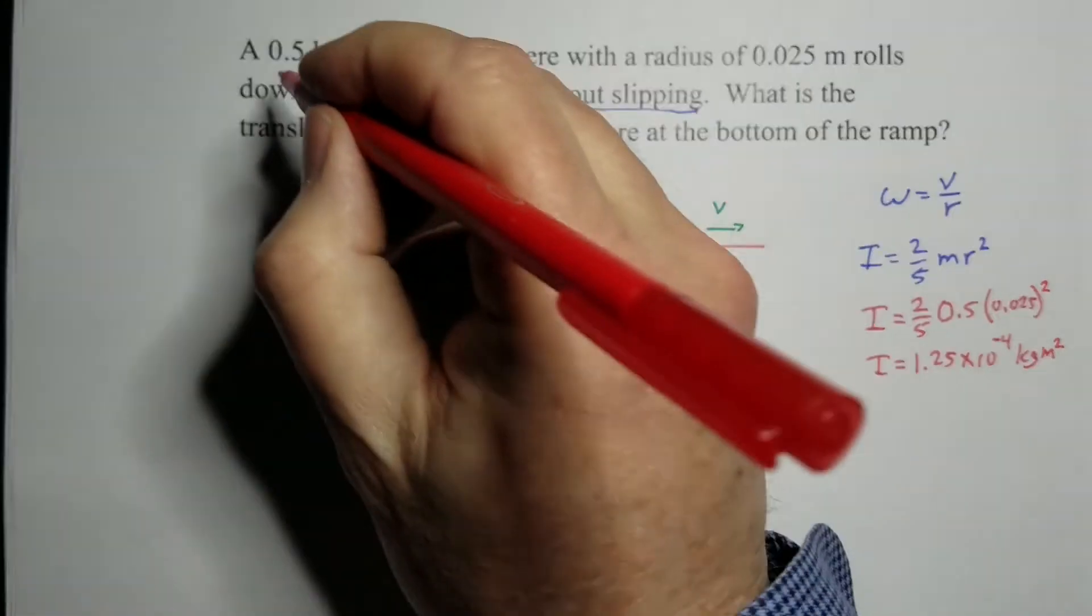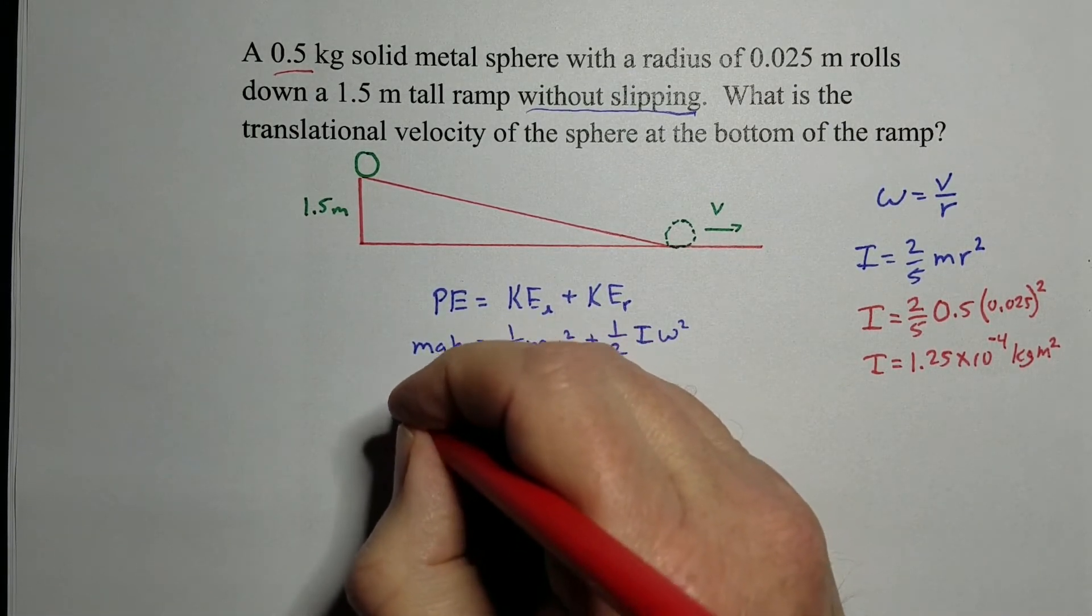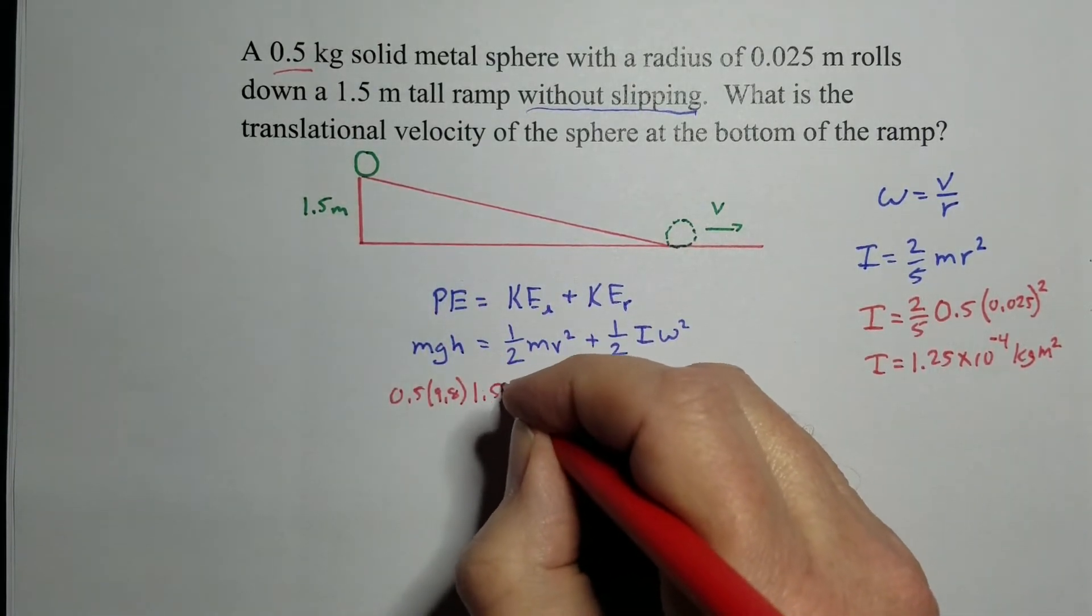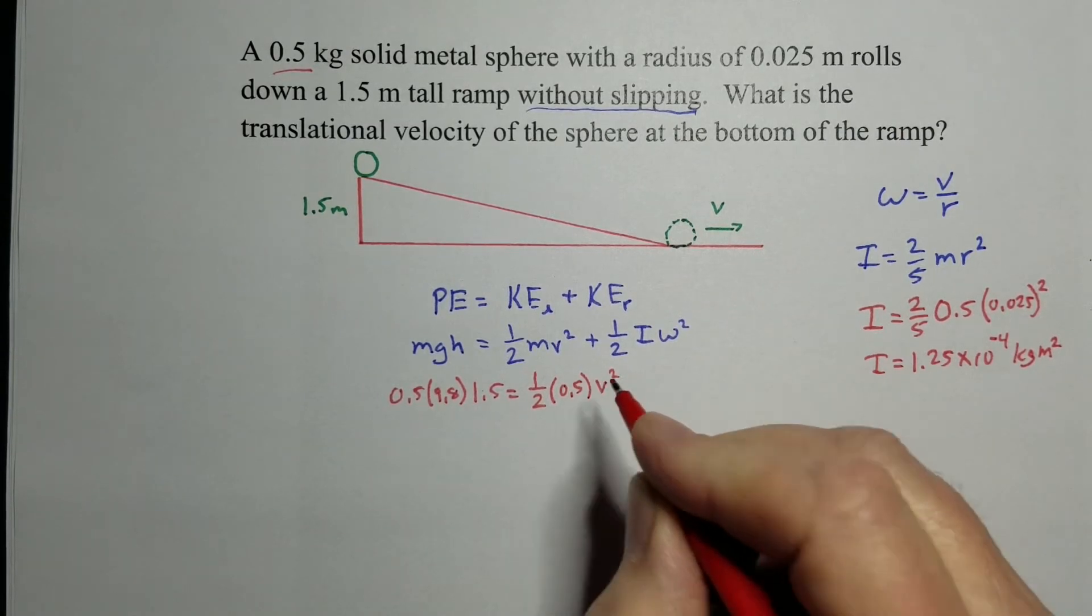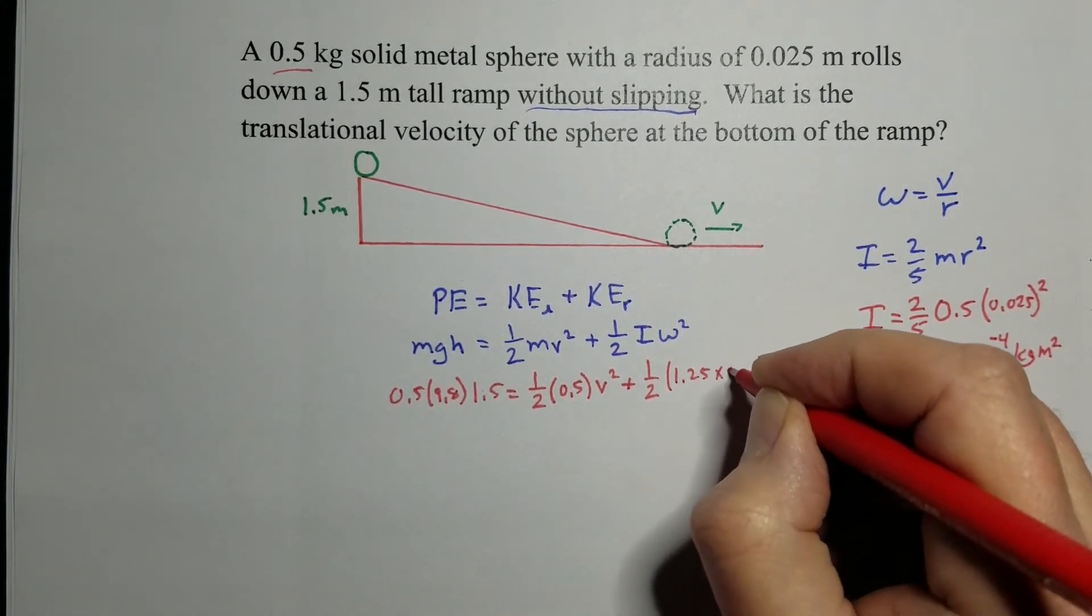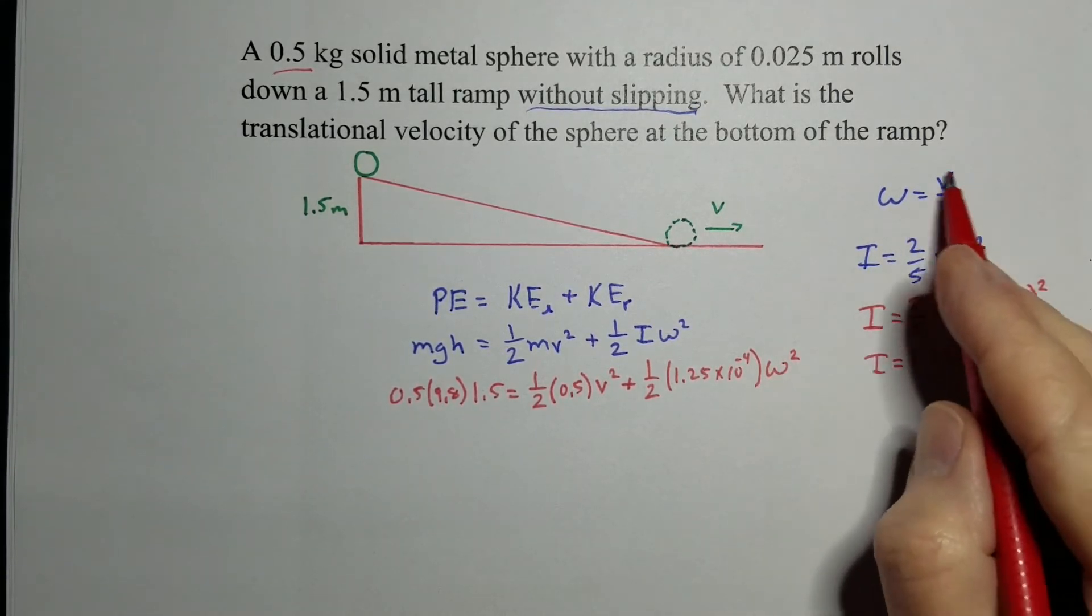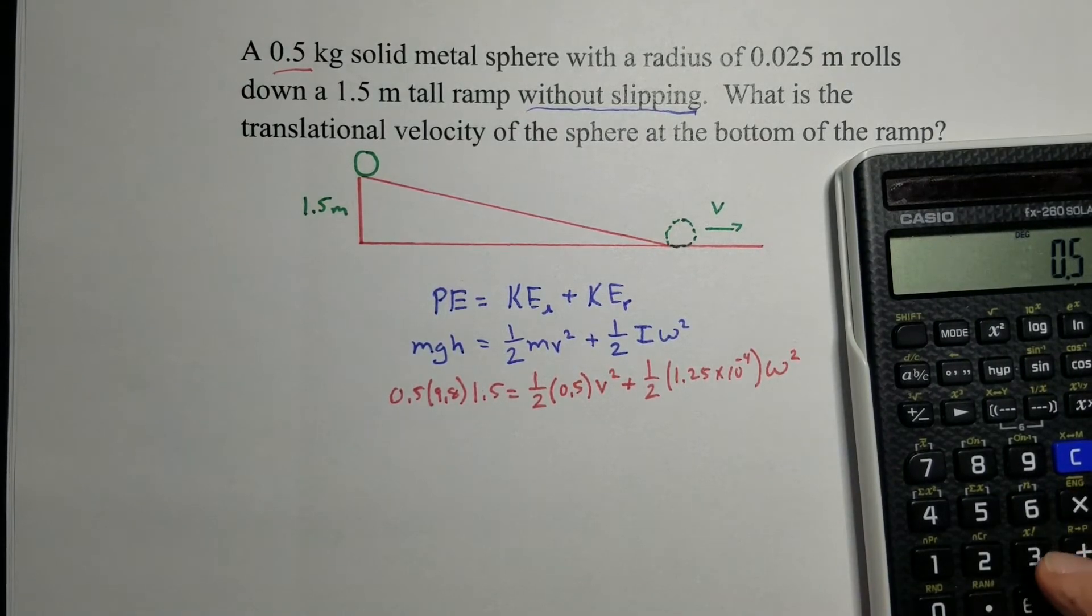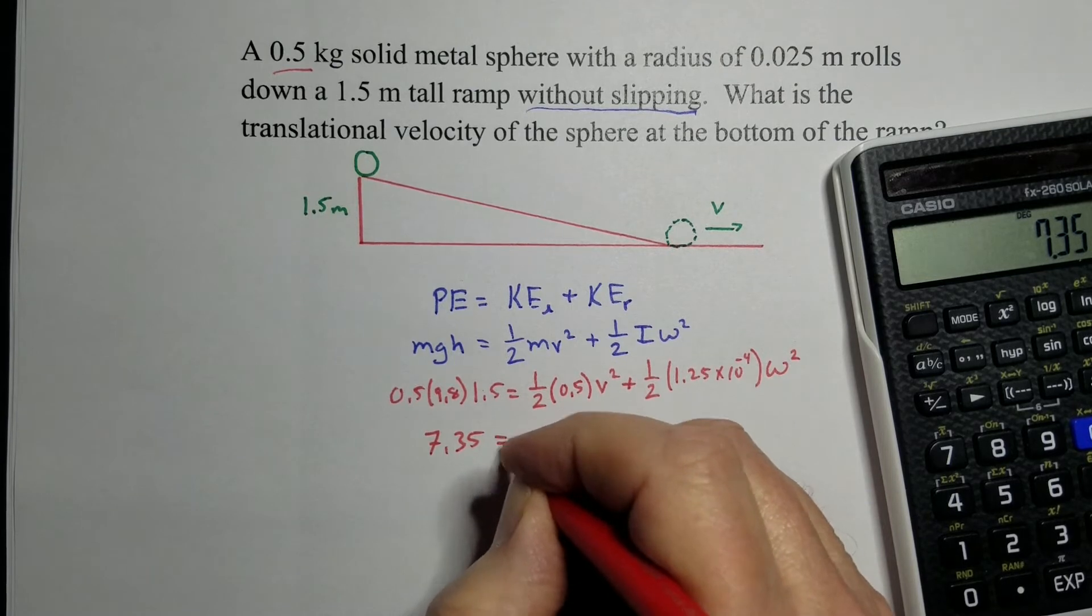We've got the mass to be 0.5. So if we just plug things in, we don't worry about canceling anything, we just plug things in. We get 0.5 times 9.8 times the height that drops, which is 1.5, equals one-half the mass, 0.5 times this velocity which we don't know just yet but we've got to figure it out, plus one-half times the moment of inertia, which is this, 1.25 times 10 to the minus 4 times this omega squared thing. Well, omega is this, so we can substitute that in. So let's go ahead and do some numbers to reduce this down a little bit. So 0.5 times 9.8 times 1.5 gives me 7.35 joules at the start.